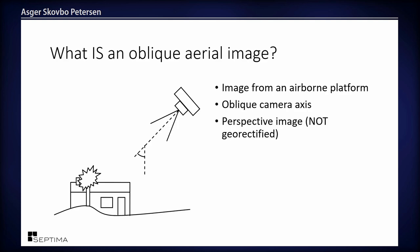What is an oblique aerial image? It's an image from an airborne platform with an oblique camera axis, which is different from most other aerial images that tend to have a vertical axis. It is a perspective image, so it's nothing like an orthophoto — it's more like an image taken with an iPhone or a regular camera. That's a very important property about this data.